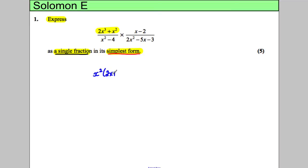Now I'm going to factorize the denominator of the first fraction. You should notice immediately that's the difference of two squares, so that factorizes as (x + 2)(x - 2). Let's keep our multiply sign there and multiply by this.